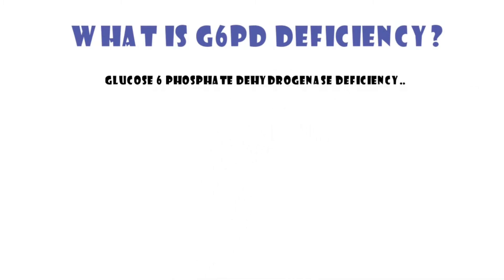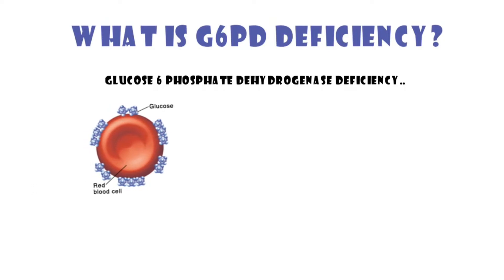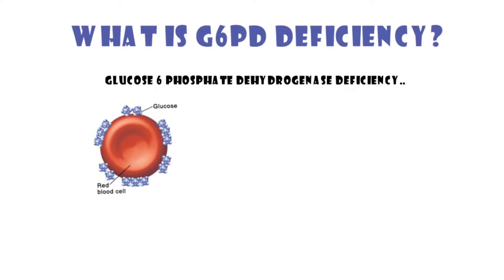It's the most common inherited metabolic disease. The G6PD enzyme keeps red blood cells stable. Most people with G6PD deficiency will not show any symptoms.